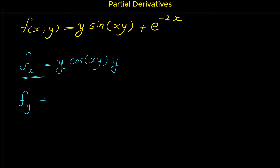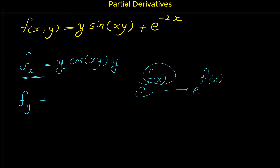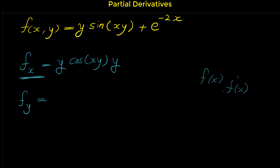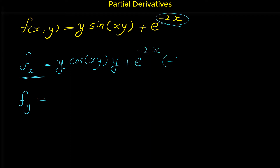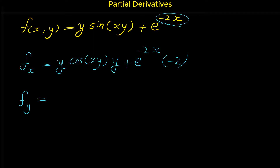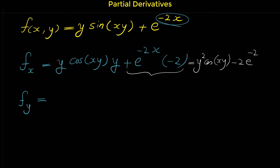Next, we find the derivative of e to the power of negative 2x. The derivative of e to any expression is the same function multiplied by the derivative of the exponent. The derivative of the exponent negative 2x is negative 2. So the derivative is e^(negative 2x) times negative 2. Therefore, the partial derivative of f with respect to x simplifies to y²·cosine(xy) minus 2e^(negative 2x).